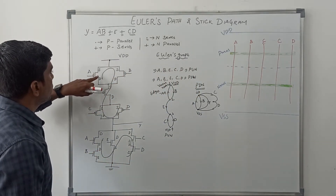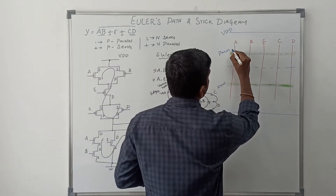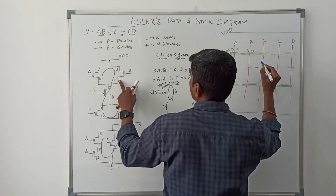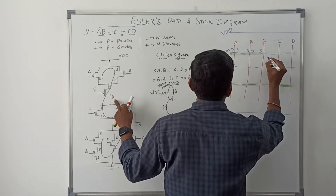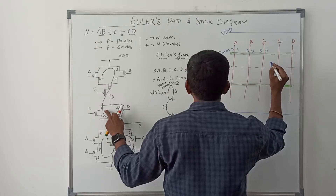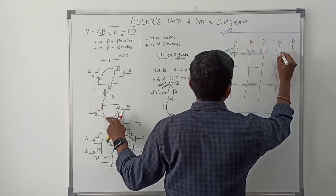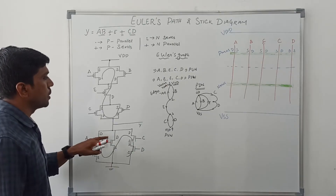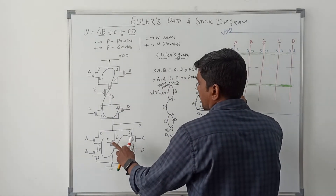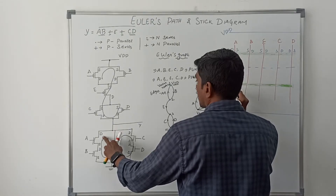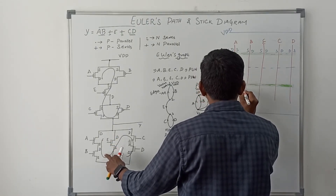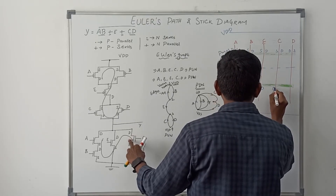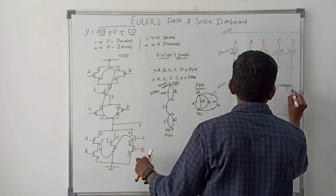Here the terminals start from drain to source. In the pull-up network: drain, source, source, drain, source, drain, drain, source, drain, and source. In the pull-down network, similarly: drain, source, drain, source, source, drain, drain, source, drain, and source.